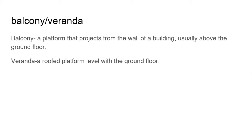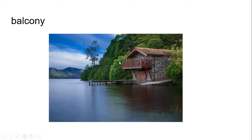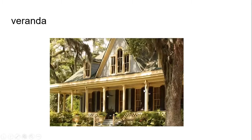A balcony and a veranda — what's the difference? A balcony is a platform that projects from the wall of a building, usually above the ground floor, and a veranda is a roofed platform level with the ground floor. Here's what I mean. You can see in the picture: this is a balcony, and this is a veranda because it's on the ground floor.